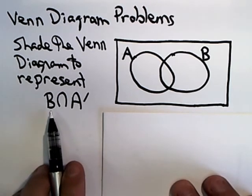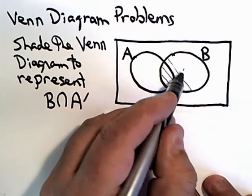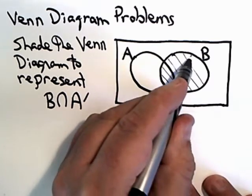One way to do it is to shade the set B, which would be here.